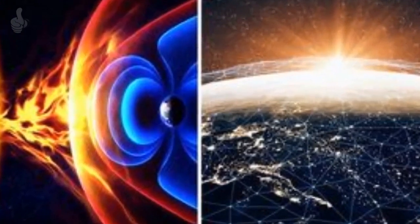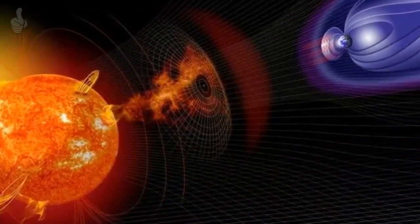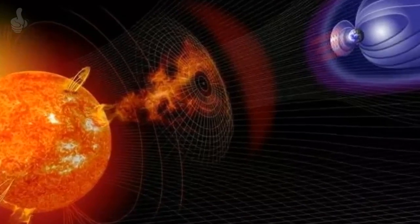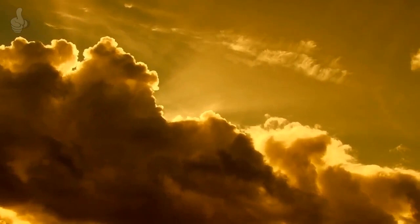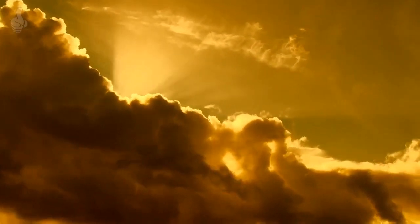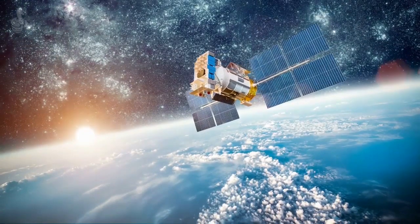Experts said that the solar wind flies toward the Earth at a speed of 600 km per second and may trigger a G-1 storm. A G-1 class solar storm can lead to weak power grid fluctuations and can have a minor impact on satellite operations.